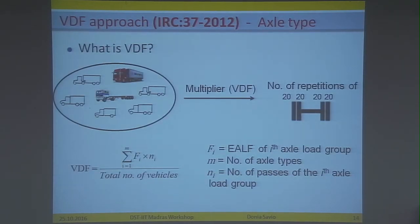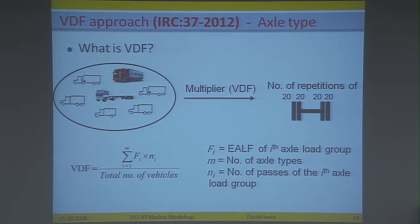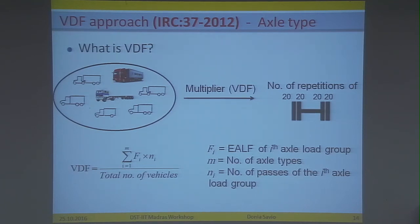What is the vehicle damage factor? VDF is a multiplier that converts all commercial vehicles with different axle configurations and axle loads to the number of load repetitions of a standard axle load of 80 kN. This is an axle type approach: we strip the data by axle type, classify them, build a frequency distribution, and use the formula where Fi is the EALF of the i-th axle load group, M is the number of axle types considered, and Ni is the number of passes of the i-th axle load group.